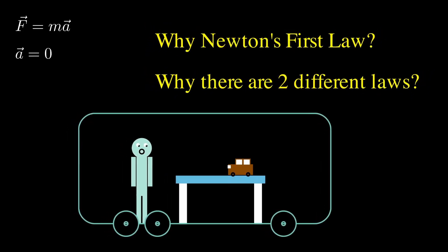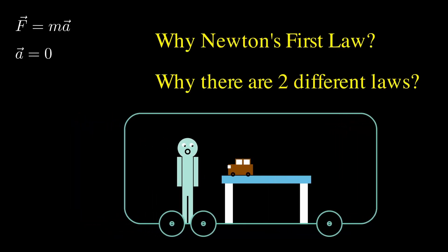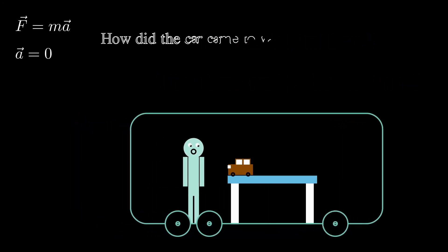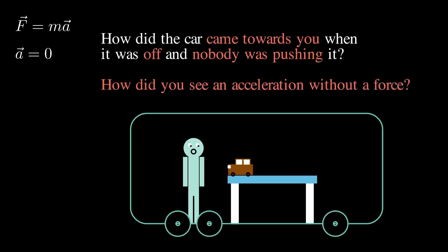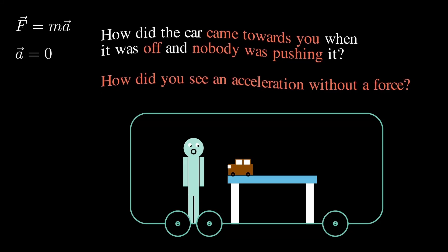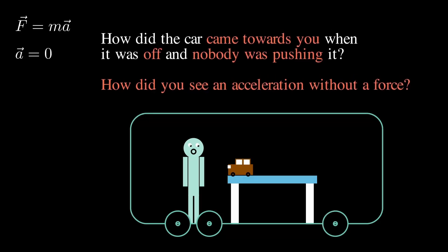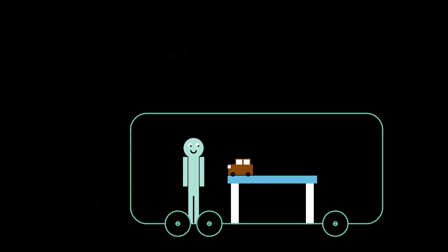You got shocked to see that the toy car moved on top of the table. And you started thinking, how did the car come towards you when it was off and nobody was pushing it? How did you see an acceleration without a force? Are Newton's laws wrong? But then you quickly realize that since there were no windows in the bus, you didn't notice that the bus moved. And that showed you the importance of Newton's first law.